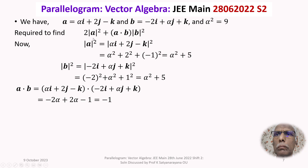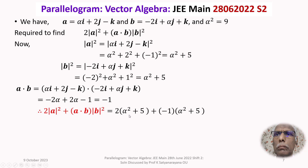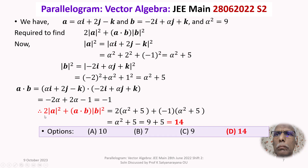Substituting into 2 times mod a squared plus a dot b times mod b squared: we get 2 times (alpha squared plus 5) plus (minus 1) times (alpha squared plus 5), which simplifies to (alpha squared plus 5). Substituting alpha squared equals 9 gives 9 plus 5 equals 14. That is the required answer, which appears against option D.